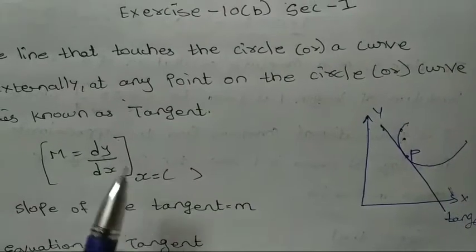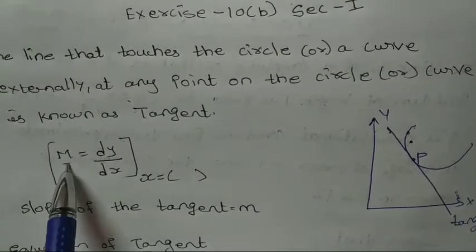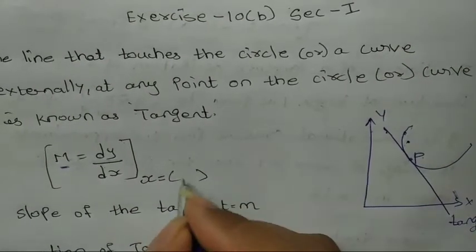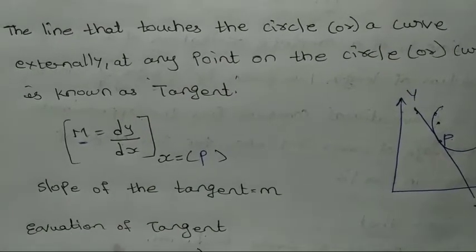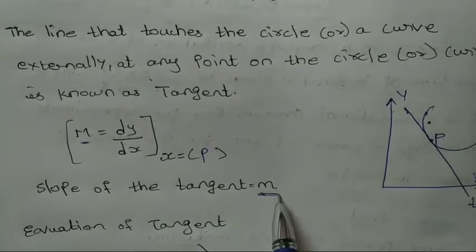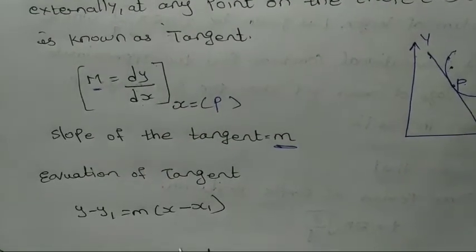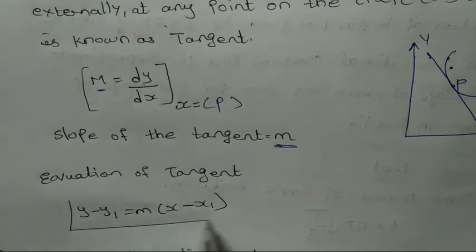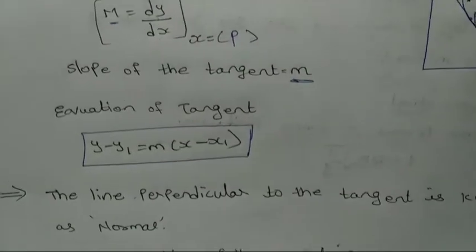At point P, the slope m is equal to dy/dx at that point. So slope of the tangent m = dy/dx. The equation of tangent is: y minus y₁ equals m into x minus x₁.